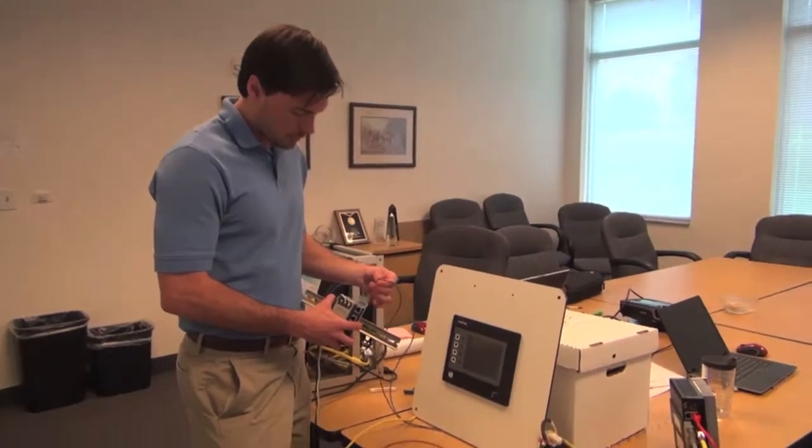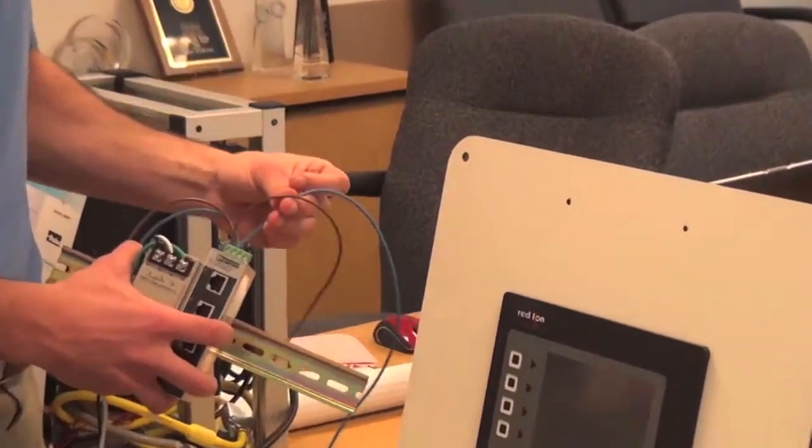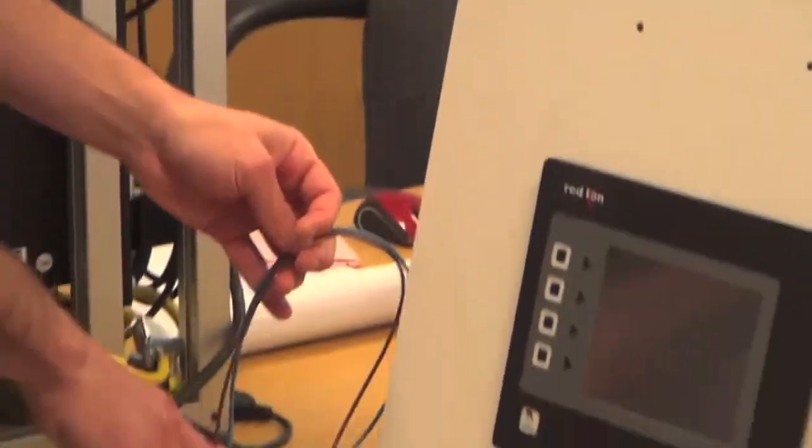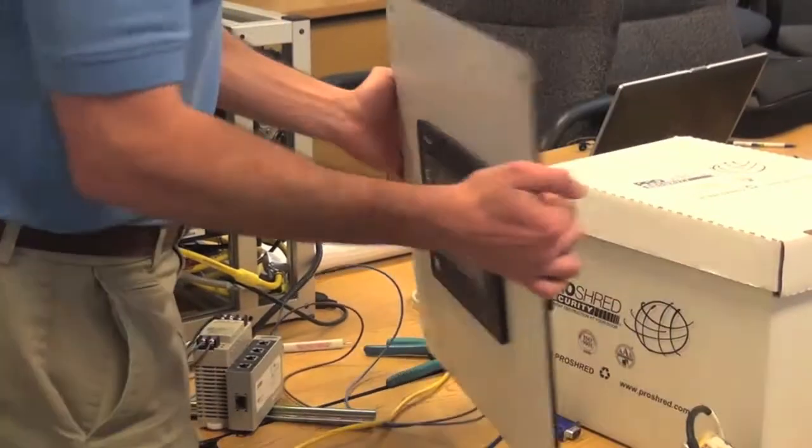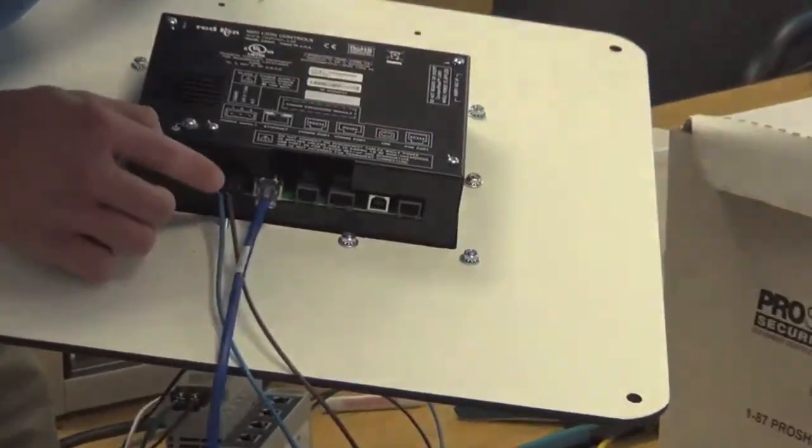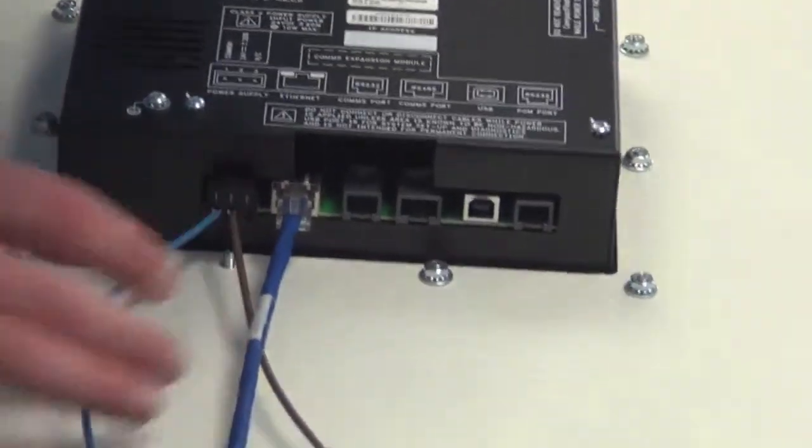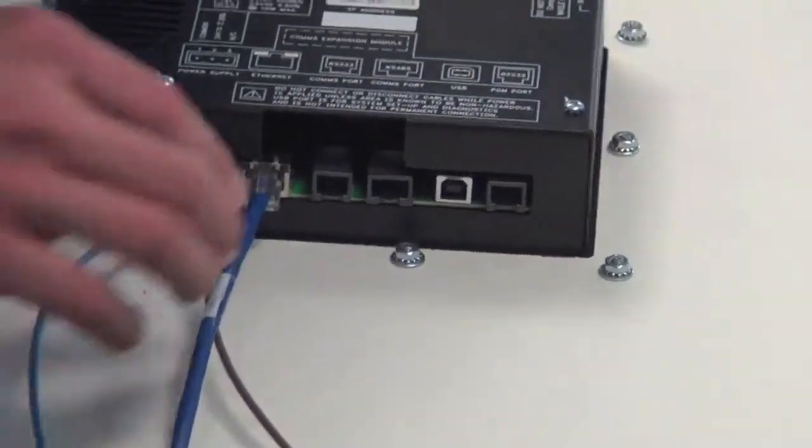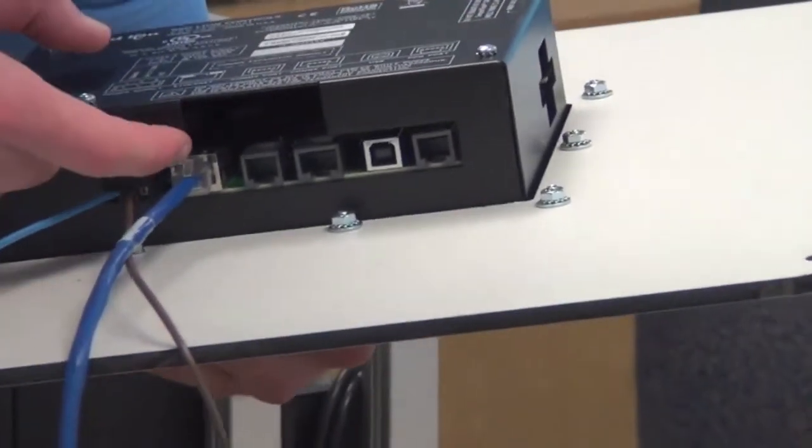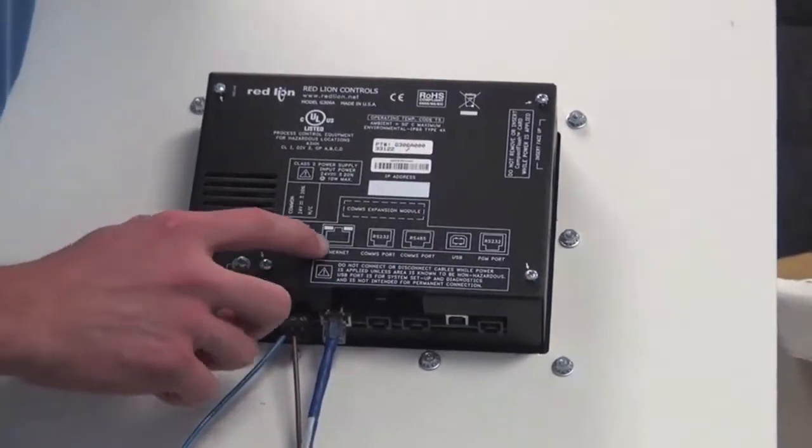Okay here we've jumpered the 24 volts DC, brown being positive voltage, blue being negative voltage, over to the red line HMI on the back. Brown will go in pin 2 which is your positive voltage and blue will go into pin 1 which is your negative voltage. And here I've hooked up the ethernet switch into its ethernet port on the back of the red line as you can see from the schematic.